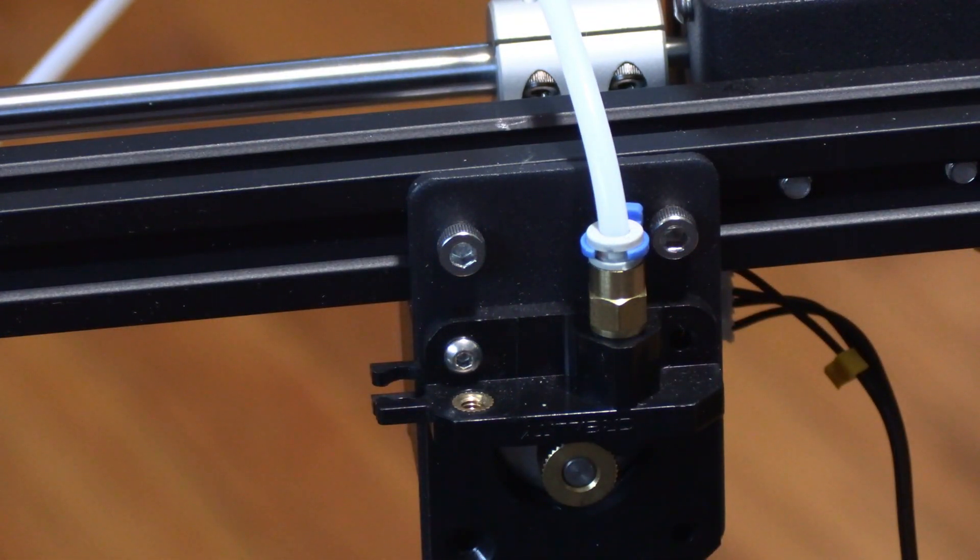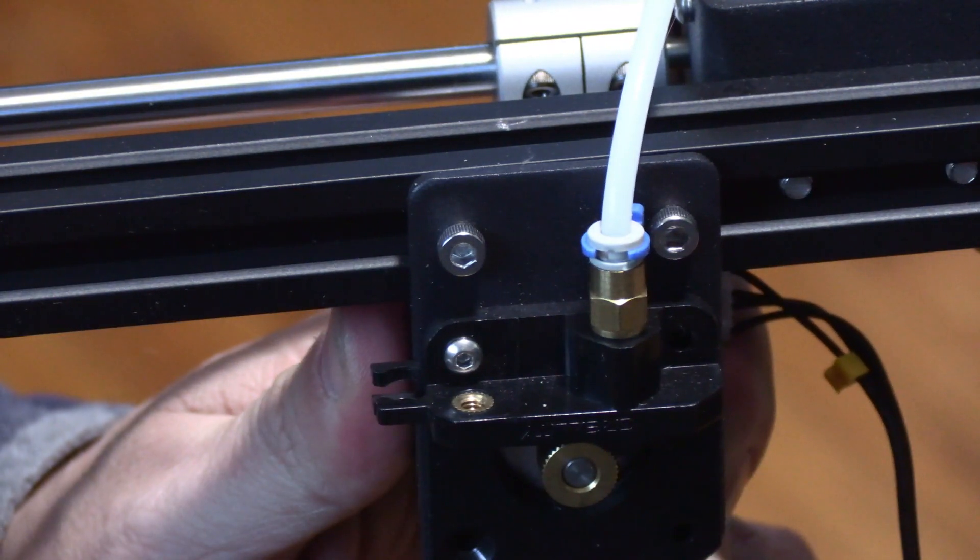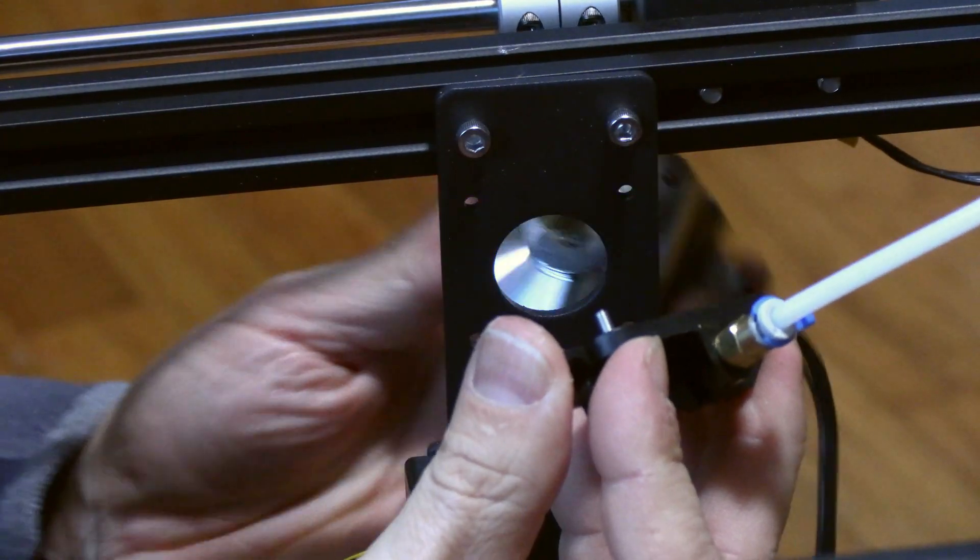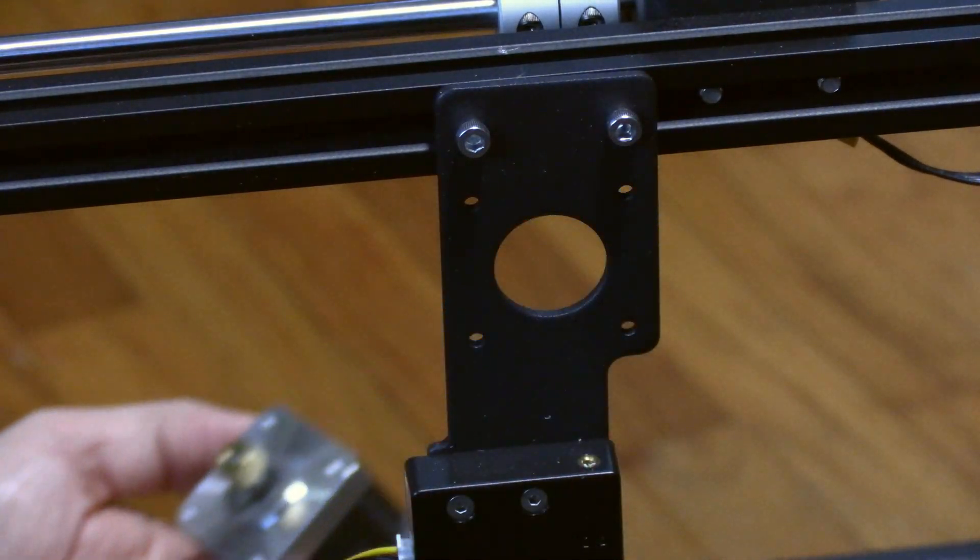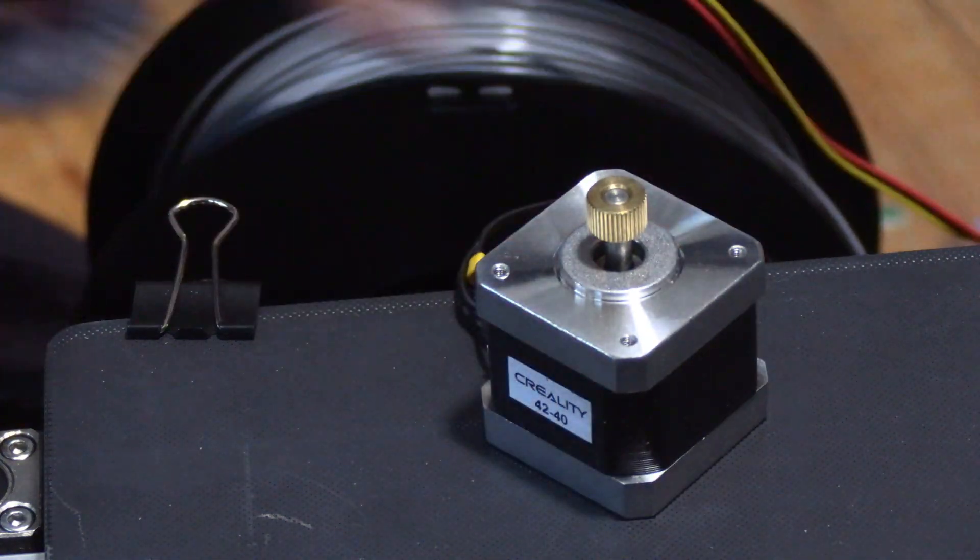Now before you remove the final screw you need to reach behind the machine and hold on to the stepper motor. Back out the final screw and the extruder and stepper motor will both separate from the bracket. Be very careful the stepper motor is attached. Place it down gently on your print bed.